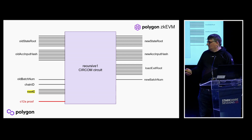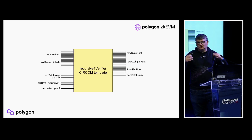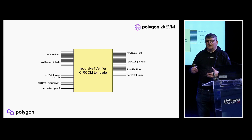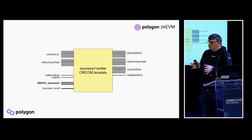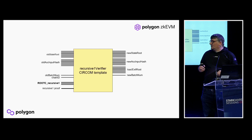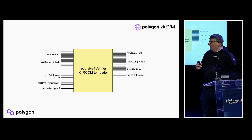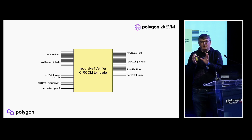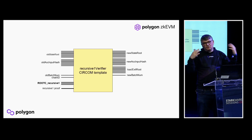What we do here is generate a template — not a full circuit, but a template that performs this verification. You pass the output of the last circuit as a private input, and this template circuit verifies it. This template is the key building block for what comes next.